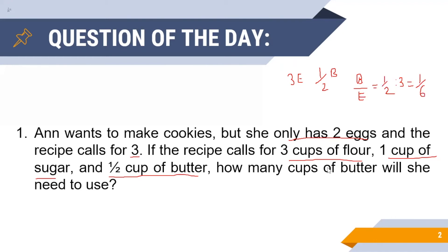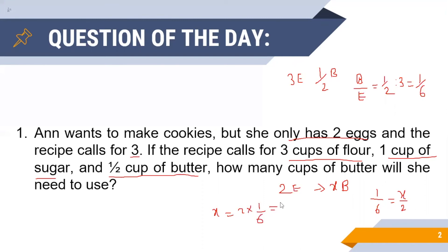Now let us assume that for 2 eggs, Anne needs x cups of butter. Hence, 1/6 should also be equal to x/2, and therefore x can be found out by multiplying 2 with the ratio 1/6, giving us 1/3 as the answer. Hence, the number of cups of butter that Anne needs to use for 2 eggs is equal to 1/3.